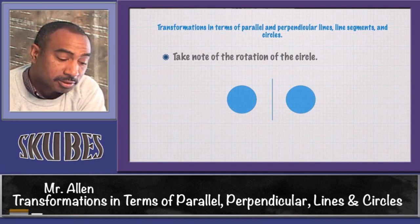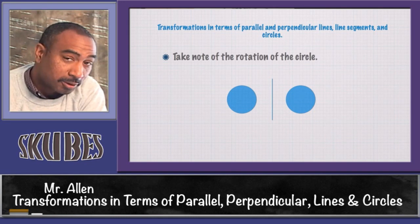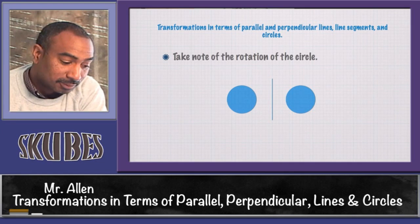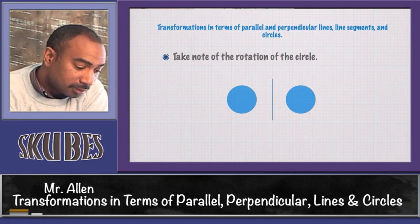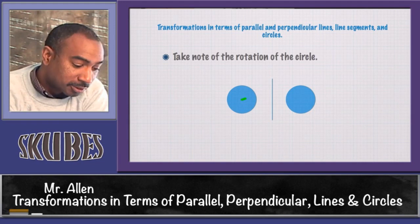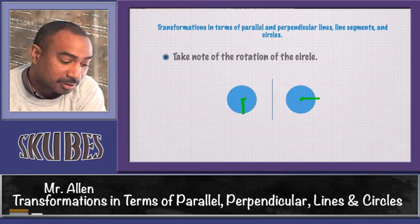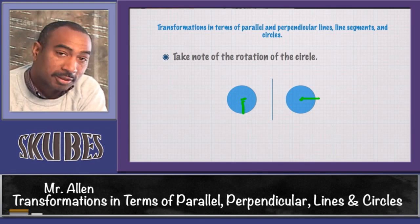Take note of the rotation of a circle. Again, the circle has no edges, no angles, so the rotation is going to look the same. It's like spinning a ball around—you still have a center. The radius could move around, but it's still going to be this equal distance from the center, so that's not going to change.